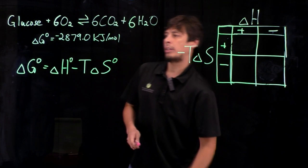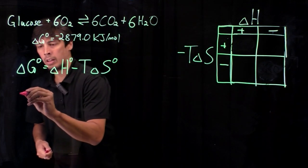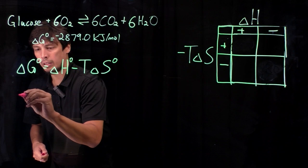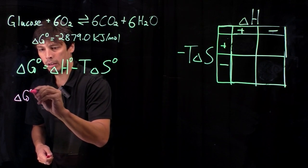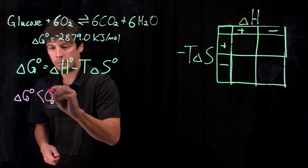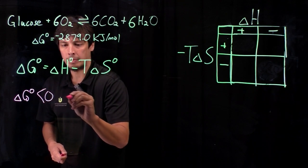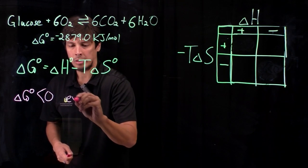So we're going to define some terms. First, if delta G, if the change in the free energy is less than zero, we call that exergonic.